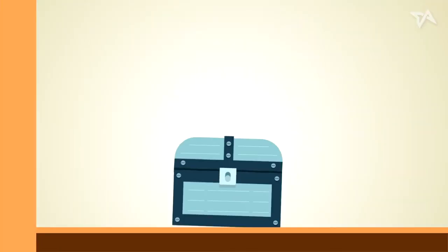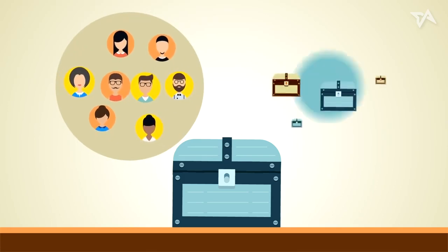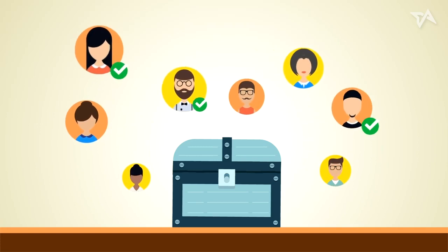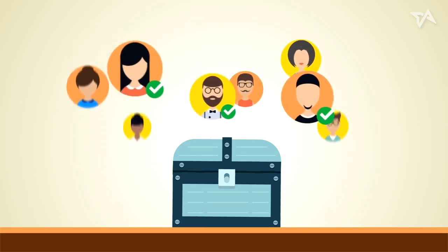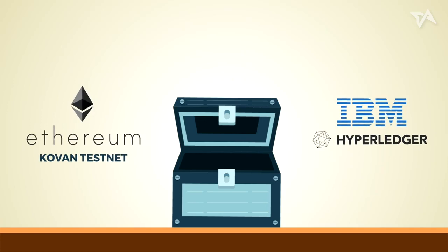Let's revisit the treasure chest scenario. The group of treasure hunters form a union and pool their treasures. Based on their level of trustworthiness, a select few are appointed by the group to ensure the validity of the chest's content. IBM's Hyperledger Fabric and Ethereum's Coven Testnet are some examples of blockchain systems that use proof-of-authority.